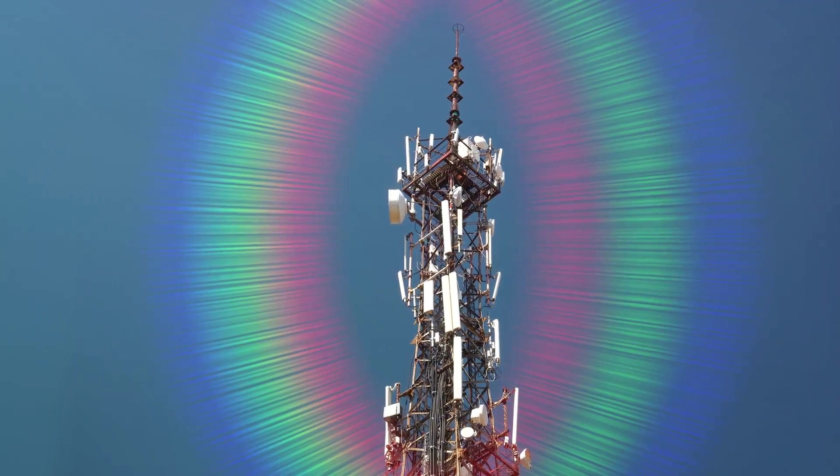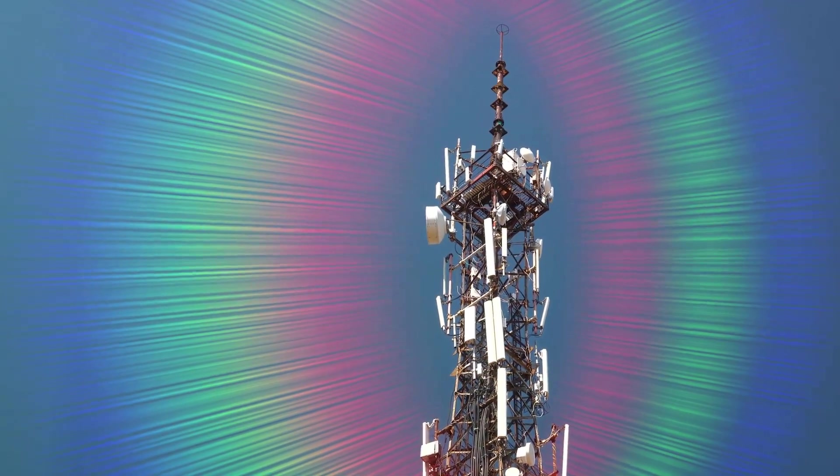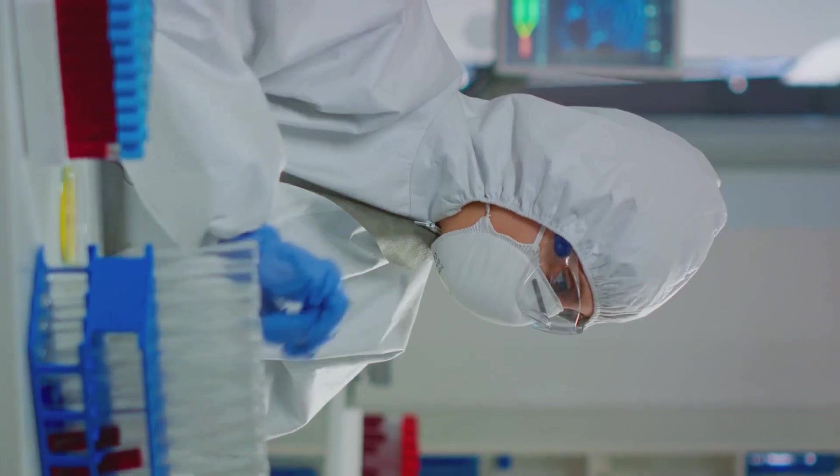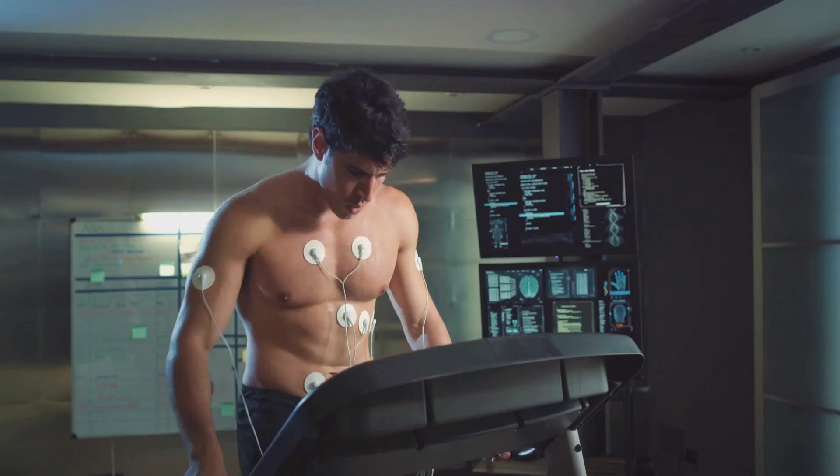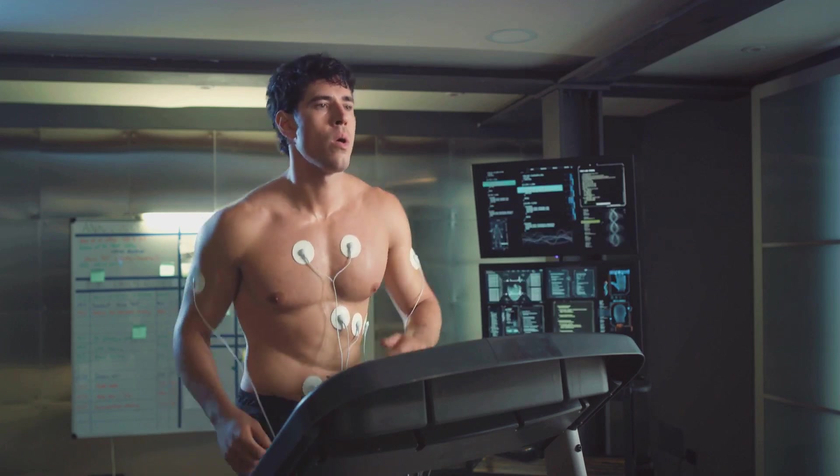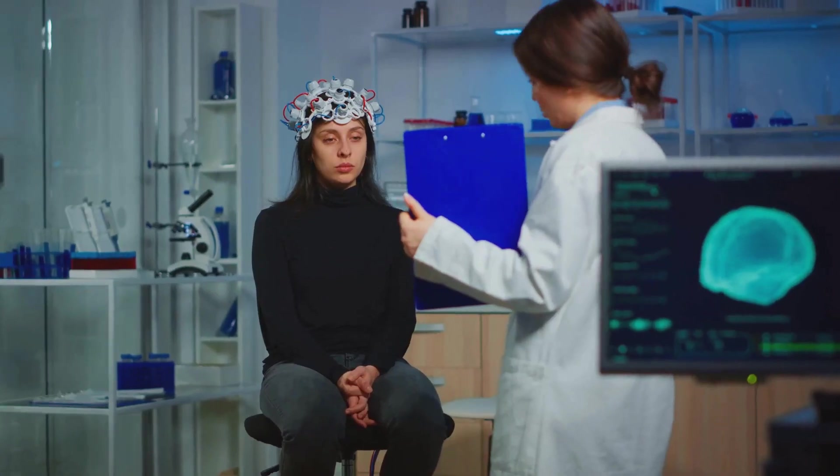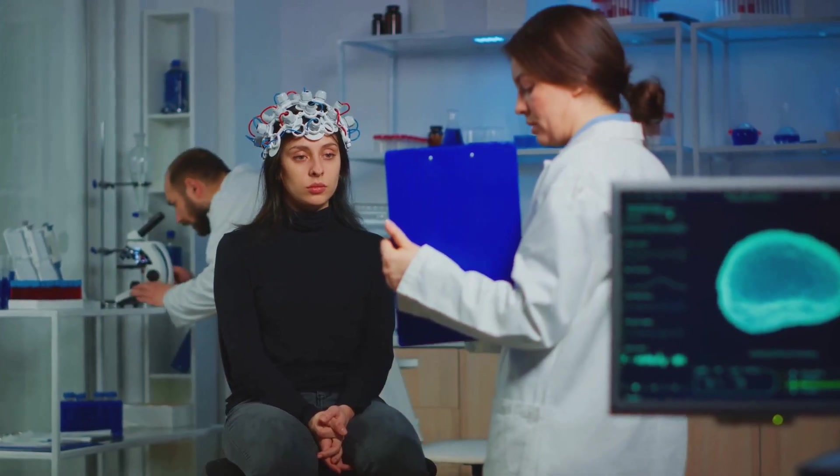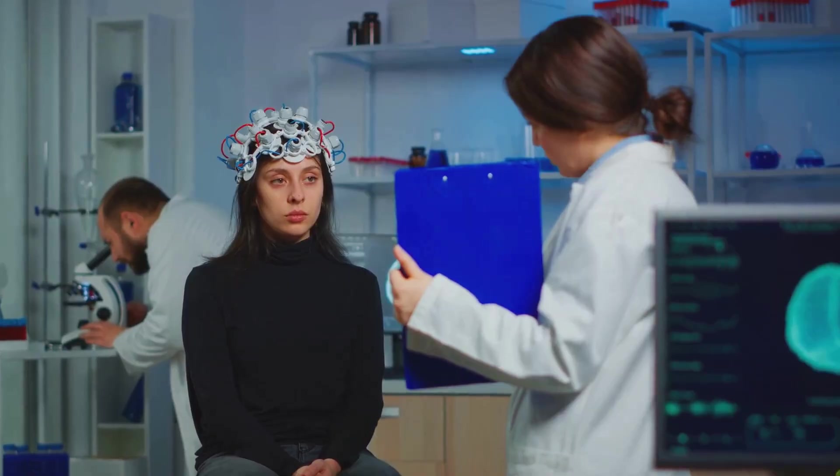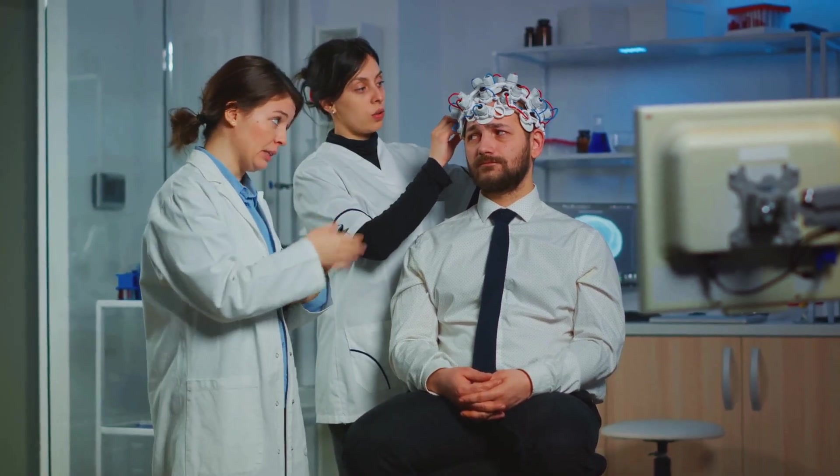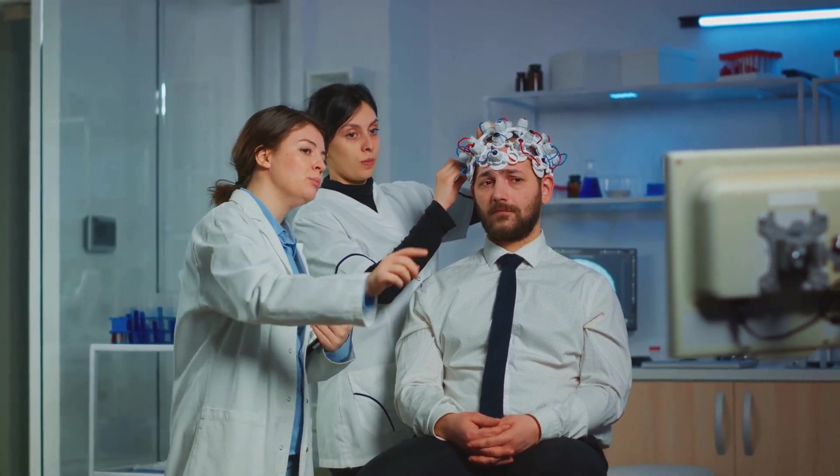Imagine this, scorpion venom, a substance that usually spells danger, being transformed into a potent anti-cancer agent. Sounds like a plot straight out of a science fiction novel, right? Yet this is one of the many potential outcomes of understanding our body's electrome. By comprehending how our cells' electrical voltages can become uncontrolled, leading to diseases like cancer, we can begin to manipulate these voltages and create groundbreaking treatments. But the possibilities don't stop at cancer treatments.